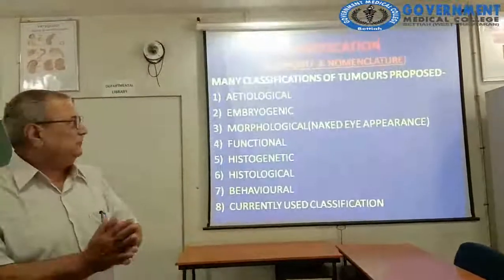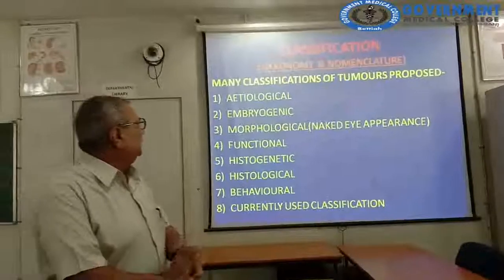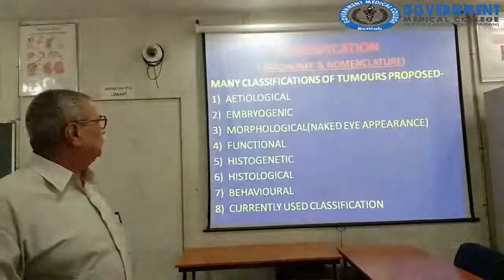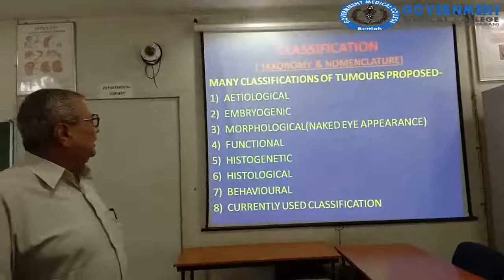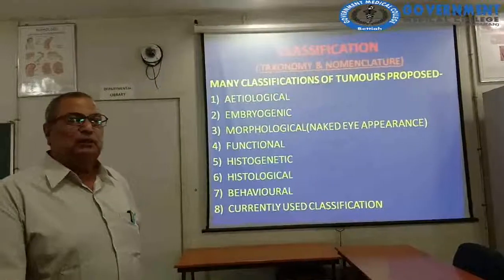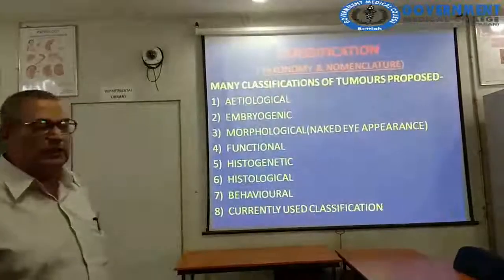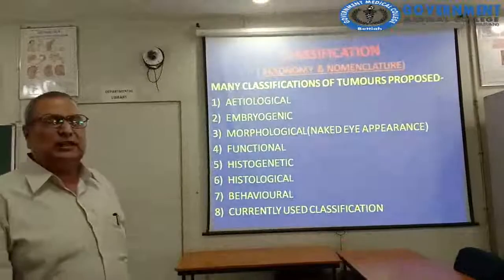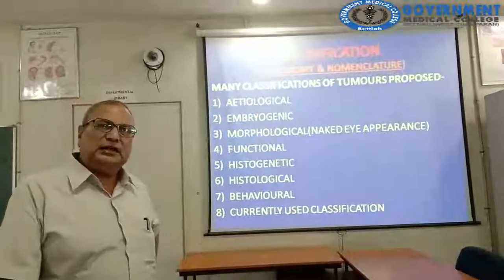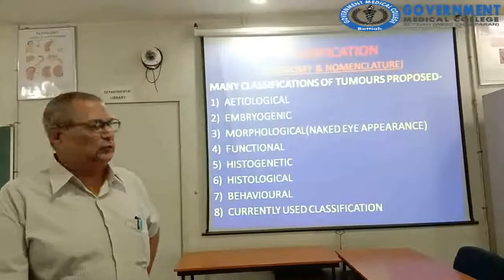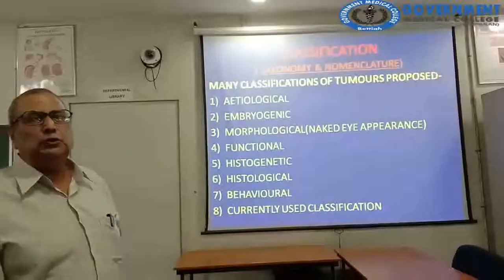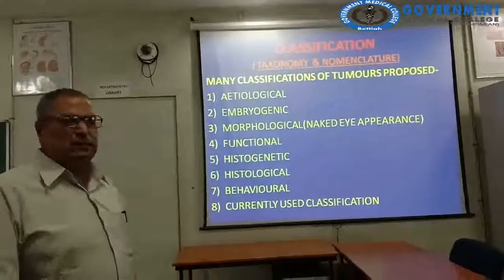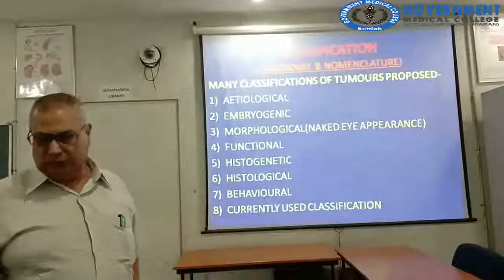The classification of neoplasm — taxonomy and nomenclature. Various classifications have been proposed from time to time: etiological classification, embryogenic classification, morphological classification, naked eye classification, functional classification, histogenetic classification, histologic classification, behavioral classification, and the currently used classification — eight categories in total.